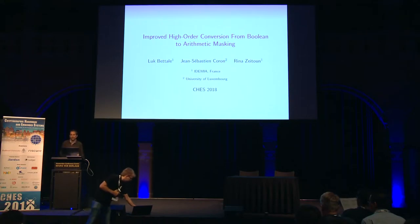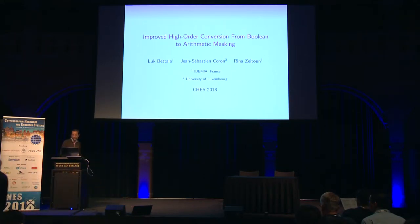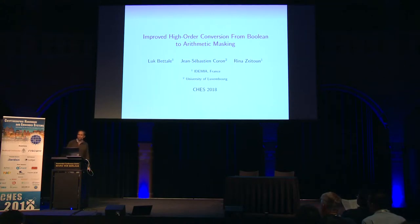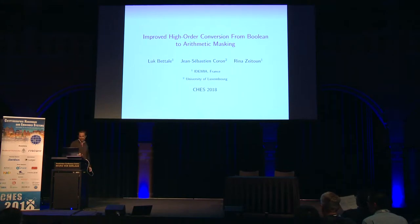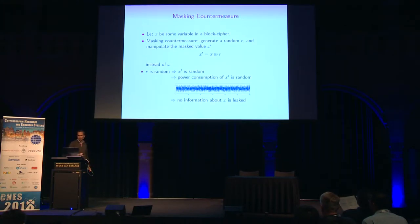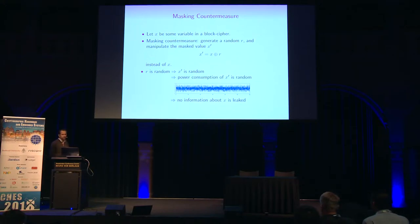In this talk, I'm going to describe a new high-order conversion algorithm from Boolean to arithmetic masking. First, I'm going to recall what is the classical masking countermeasure.